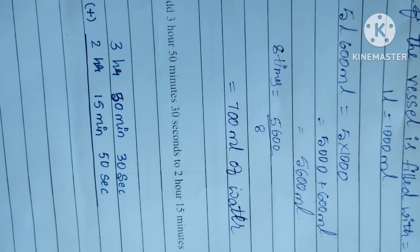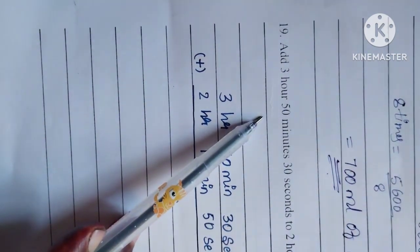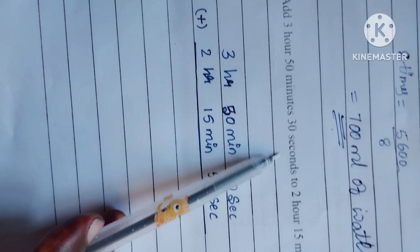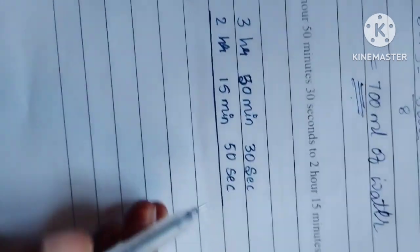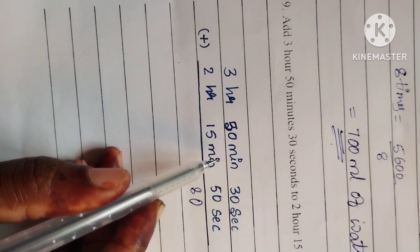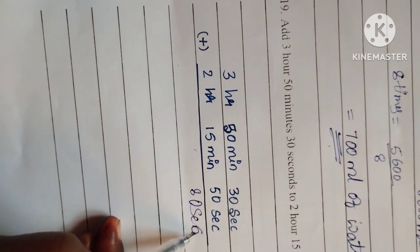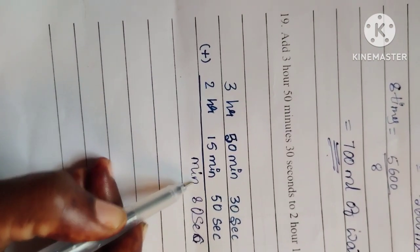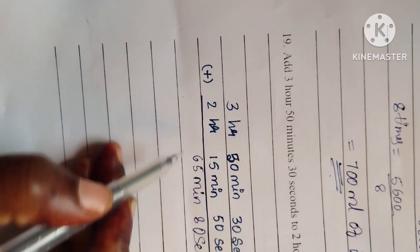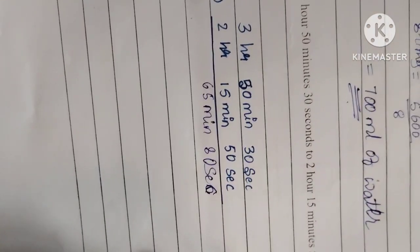The capacity of water in the tumbler is 700 ml. Next, the 19th question: subtract 2 hours 15 minutes 50 seconds from 3 hours 50 minutes 30 seconds. First handle the seconds column: 30 minus 50 can't go, and the minutes give 80 seconds total.